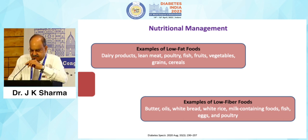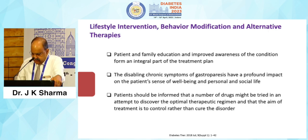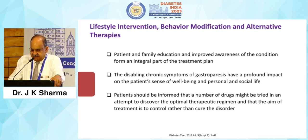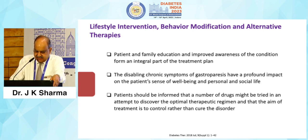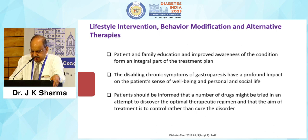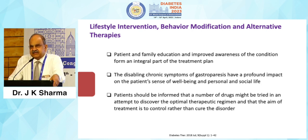Nutritional management includes low-fat foods: dairy products, lean meat, poultry, fish, fruit, vegetables, grains, and cereals; and low-fiber foods like butter, oil, white bread, white rice, milk-containing foods, fish, eggs, and poultry. Lifestyle intervention is very important. Behavior modification and patient and family education form an integral part of the treatment plan. The disabling chronic symptoms of gastroparesis have a profound impact on the patient's well-being and social life. Patients should be informed that multiple drugs might be tried to discover the optimal therapeutic regimen, and that the aim of treatment is to control rather than cure this disorder. Spend time counseling your patient.